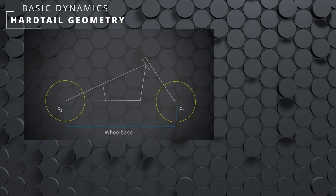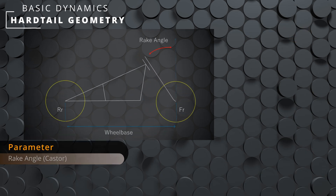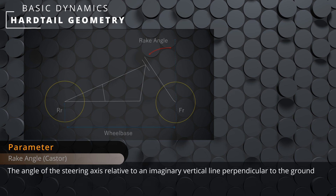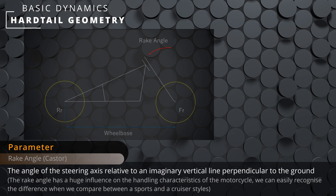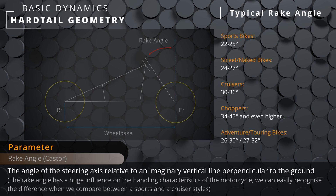Next we'll consider rake angle. This is the angle of the headstock relative to an imaginary vertical line. With a larger or shallower rake angle we're going to have a much more stable motorcycle, especially in regards to straight line stability — meaning any disturbances or external inputs are going to have less effect on the motorcycle. The downside of this, however, is that it's even more difficult for rider inputs to have an effect.